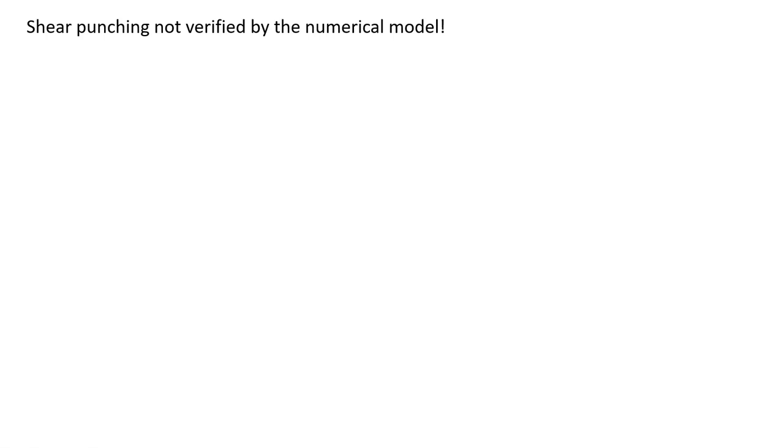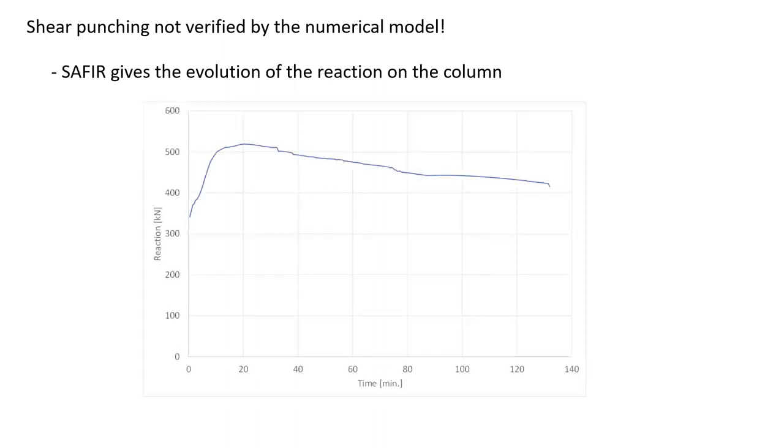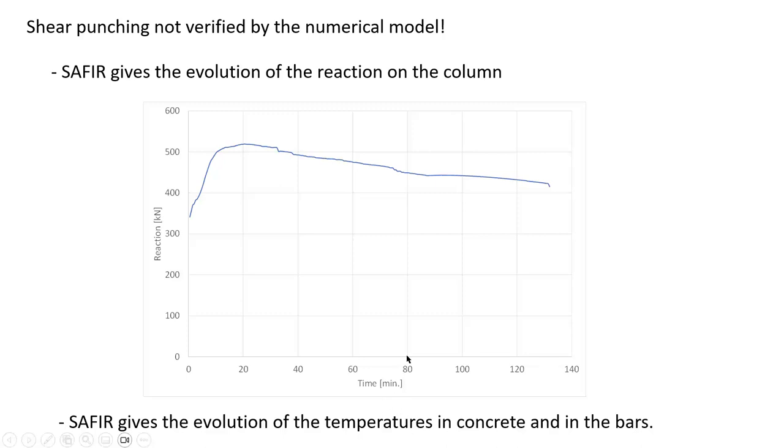We know that shear punching is not verified by the numerical models, but like some other failure modes, integrity failure for example. But for shear punching at least Saphir gives you the evolution of the reaction on the column, which you can use together with the evolution of temperatures in concrete and in the bars. So applying a simple model in which you reduce the thickness of the slab according for example to the 500 degrees isotherm, and taking into account the reduction of strength in the bars, you could get an estimation of the shear punching capacity.